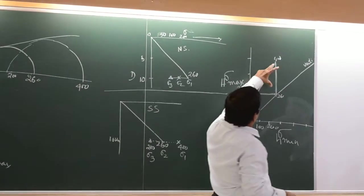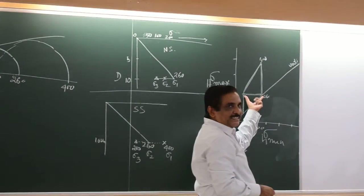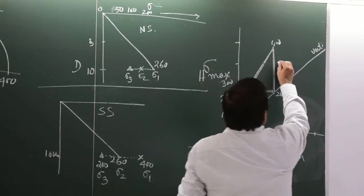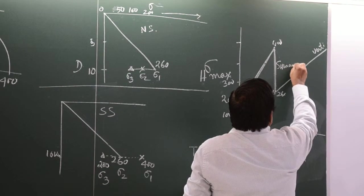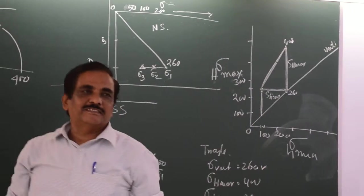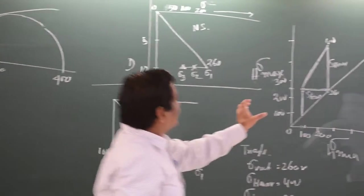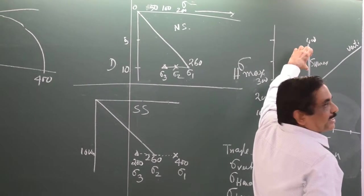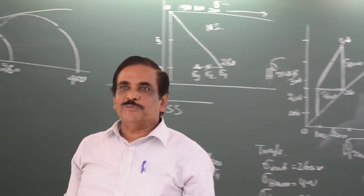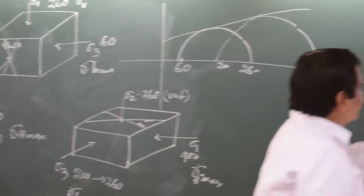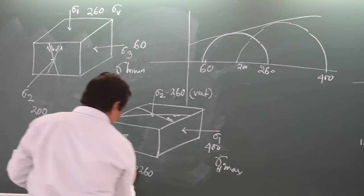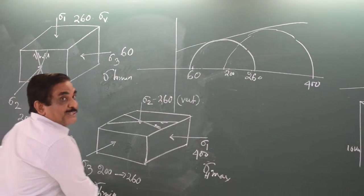This diagram on this side indicates the SH minimum. This is SH max. This axis indicates SH max. This is SH minimum indicator. This axis is SH minimum indicator. This axis is SH max indicator. So what is the SH minimum value? What is the SH minimum value? The highest value could be 260. It can be anything below this.